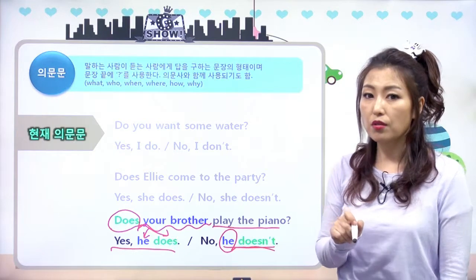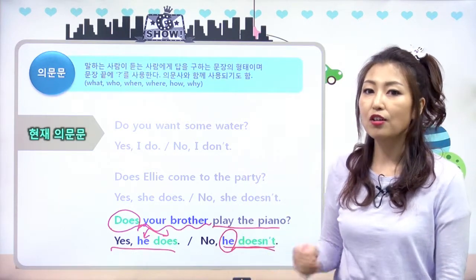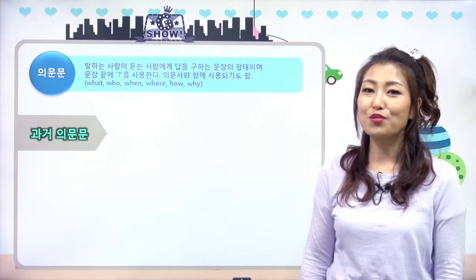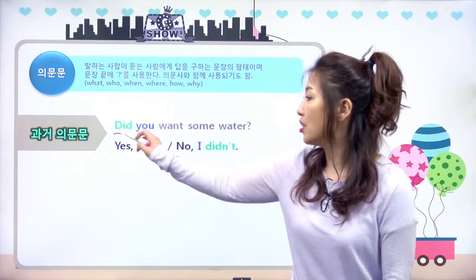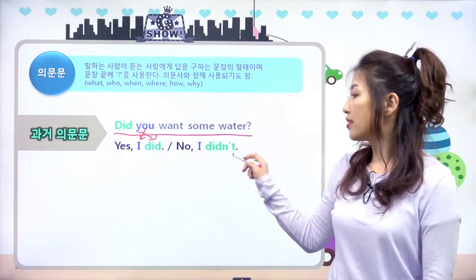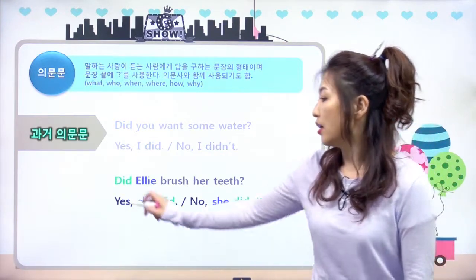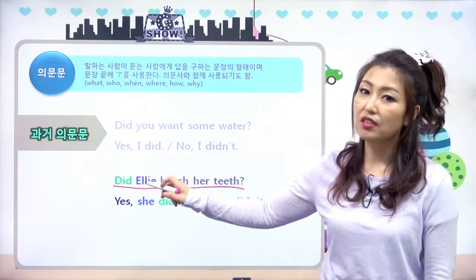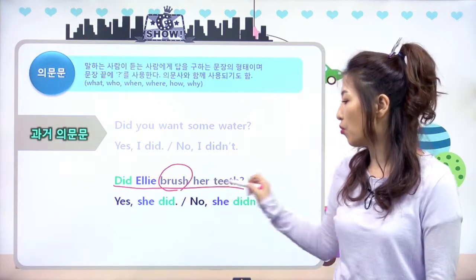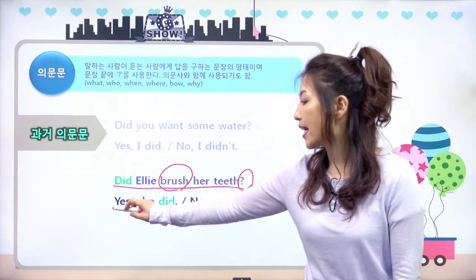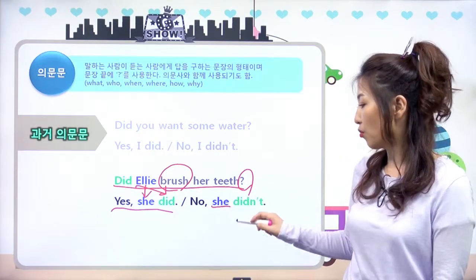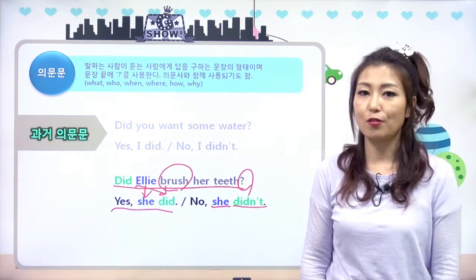일반 동사 do, does 사용해서 묻고 답하는 거 알아봤어요. 물어본 대로 답한다고 잘 기억하면 되겠죠? 과거는 참 좋죠. 3인칭 단수 이런 거 상관없이 'Did you want some water?' you니까 I로 받고, did니까 did로 받으면 돼요. 'Yes, I did. No, I didn't.' 'Did Ellie brush her teeth?' did가 과거이고, 답은 'Yes, she did. No, she didn't.'